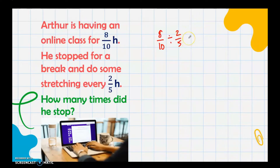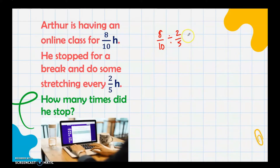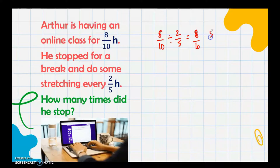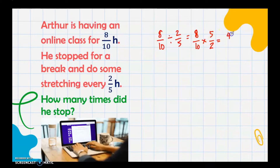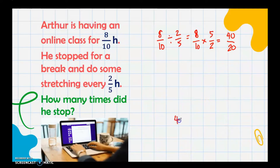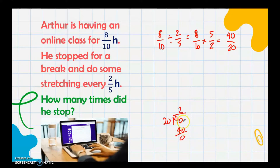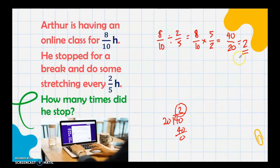The dividend is the total and the divisor is what you are dividing by. To divide simple fractions, copy the dividend (8/10), then get the reciprocal of the divisor 2/5, which is 5/2, and proceed to multiplication. Multiply the numerators and denominators: 8 × 5 = 40 and 10 × 2 = 20, giving 40/20. Since 40 ÷ 20 = 2 with no remainder, the answer is 2.